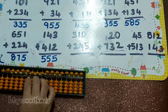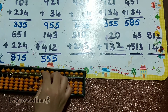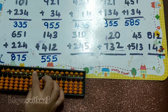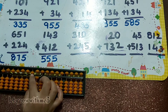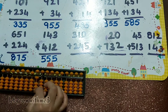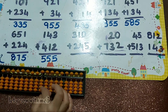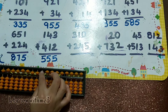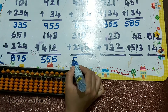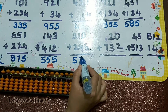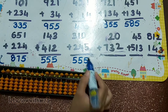Next one: 310 plus 245. How to add plus 2 — plus 5 minus 3. How to add 4 — plus 5 minus 1. And 5 directly. So our answer is 555.